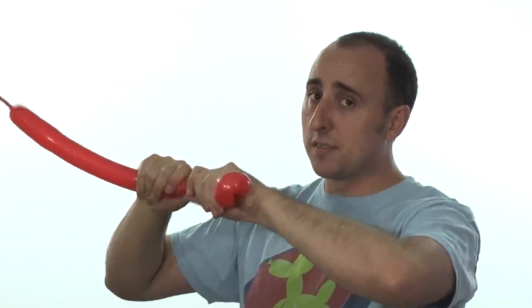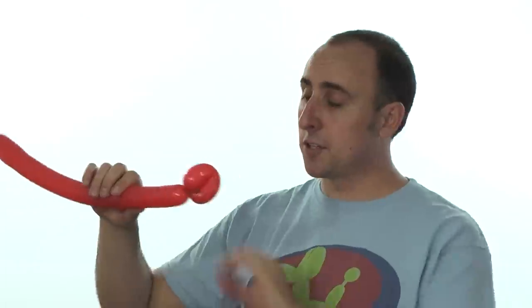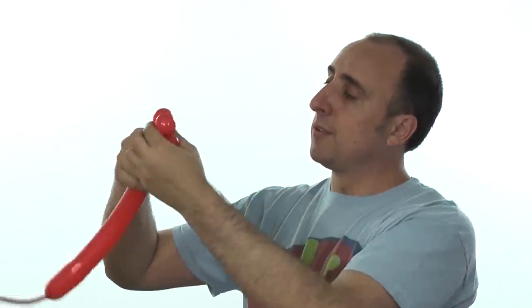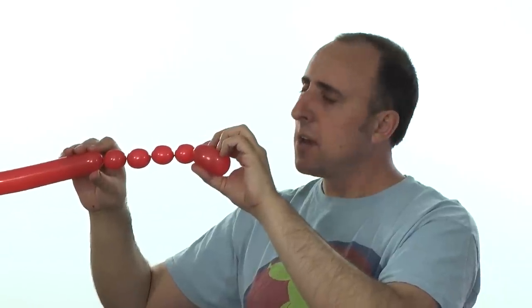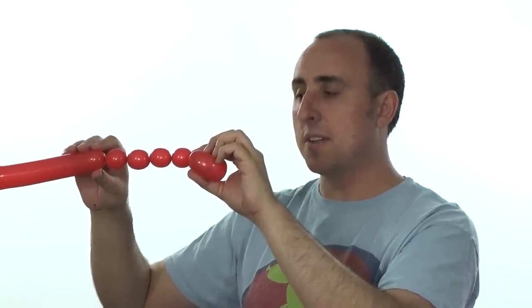Give the balloon a squeeze. Next we want to make the legs. We're gonna make four bubbles each one inch. Two, three, four. Here are the four bubbles for the legs. They don't need to be exactly the same size but it's good if they're close to the same size.